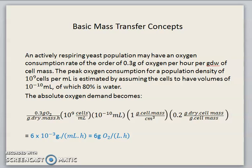Regarding the basic mass transfer concept: an actively respiring yeast population may have an oxygen consumption rate of the order of 0.3 gram of oxygen per hour per gram of dry weight of cell mass. The peak oxygen consumption for a population density of 10^9 cells per ml is estimated by assuming the cells to have volumes of 10^-10 ml, of which 80% is water. The absolute oxygen demand becomes as the equation shows here — this is the typical oxygen consumption for an active yeast population.